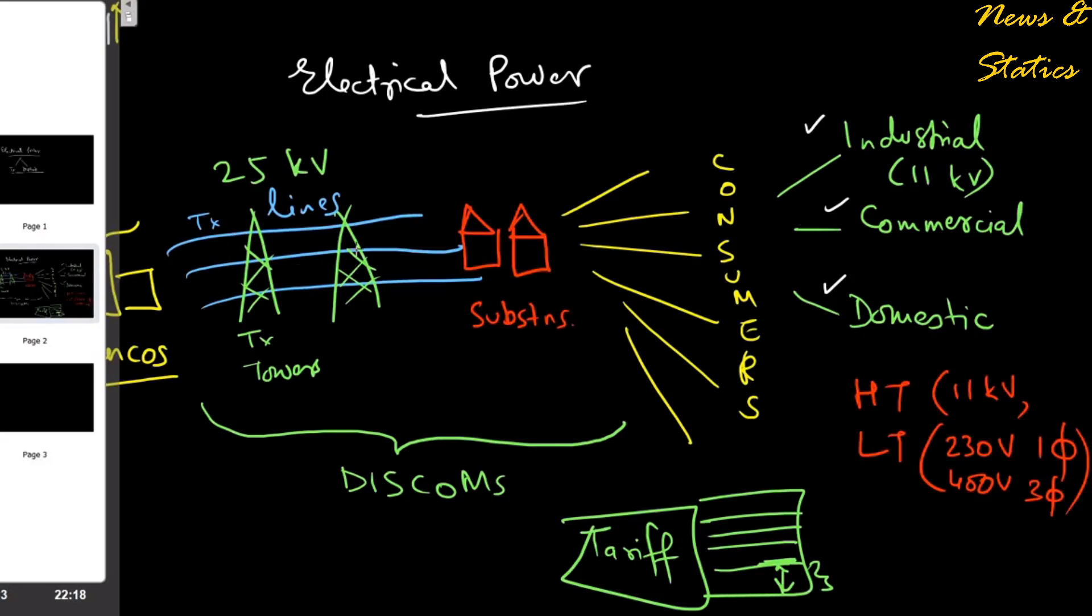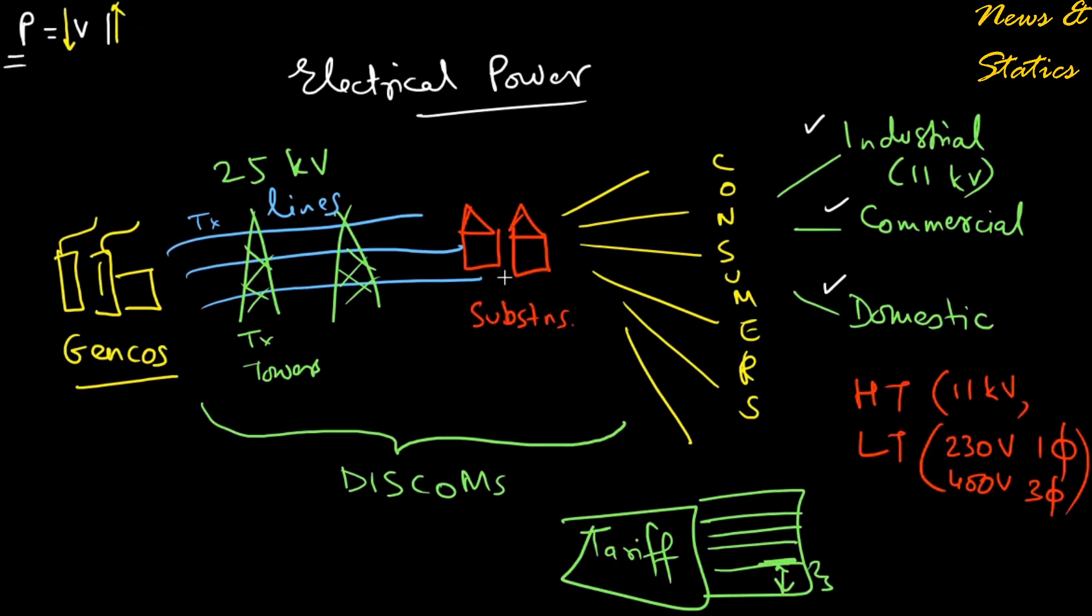Let's understand the way forward. The cost of transmission is more or less fixed. DISCOMs get into power purchase agreements with GenCos on a long-term basis. But with the volatility happening in the short term on the consumer side, the first thing they should do is switch to short-term or at most medium-term PPAs, because long-term PPAs are not good. Moreover, renewable energy is coming strong - solar energy has a tariff of about rupees 1.9 per unit, which is pretty low, whereas thermal power plants have tariffs of six to seven rupees per unit.